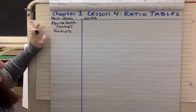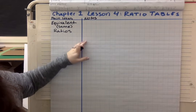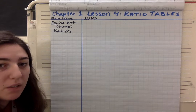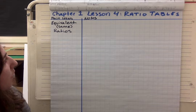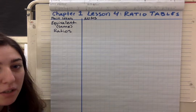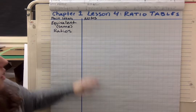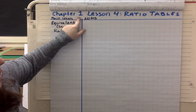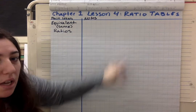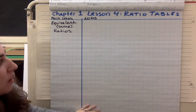I wrote that in the main ideas column. In the notes column, we are going to be doing a little example to show us what equivalent ratios are. Just a little reminder — please be writing this in your table of contents. You should be writing Chapter 1, Lesson 4, Ratio Tables as the title for this lesson.